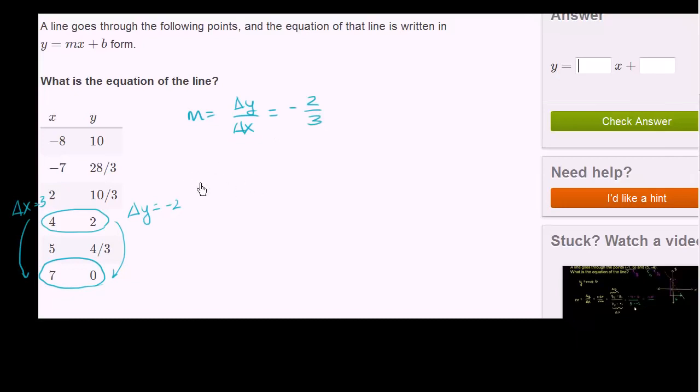And so our equation is going to be y equals negative 2 thirds x plus b. So let's substitute one of these points in here to figure out what our b must be. And once again, let's see, I want to figure out something where this is going to become nice and clean.